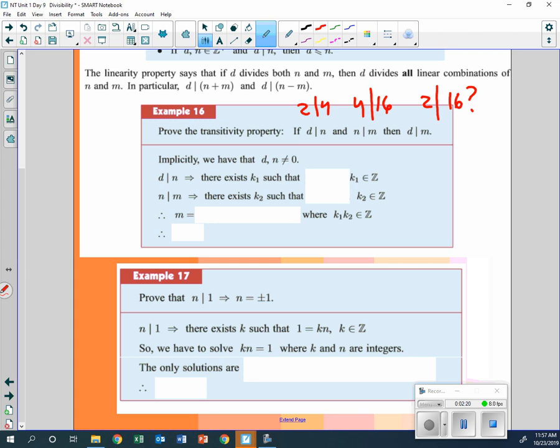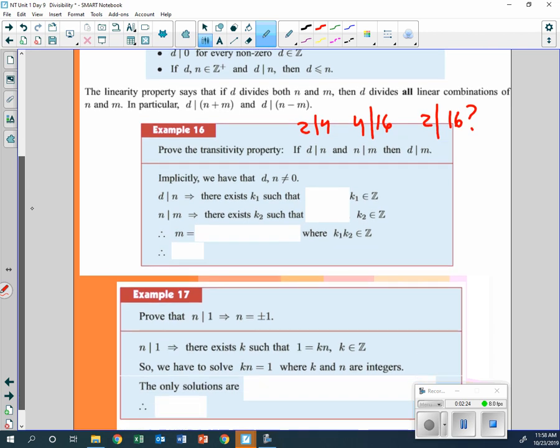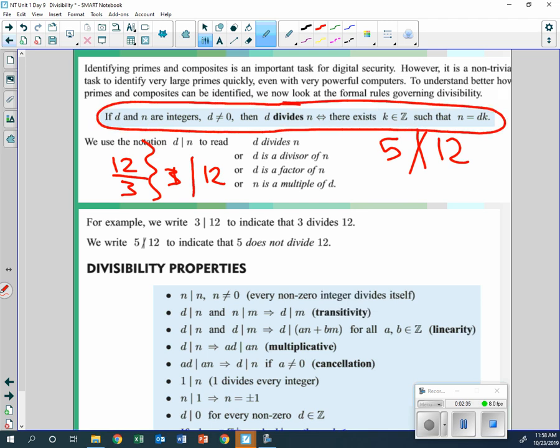So we're going to prove that. Now, whenever you're looking at a proof here, you're going to go back to the definition of divisibility. And they have it right here. It says that if you say d divides n, for all k element of Z, the bigger number is going to be the divisor, the smaller one, times a constant k. Small times k equals large.